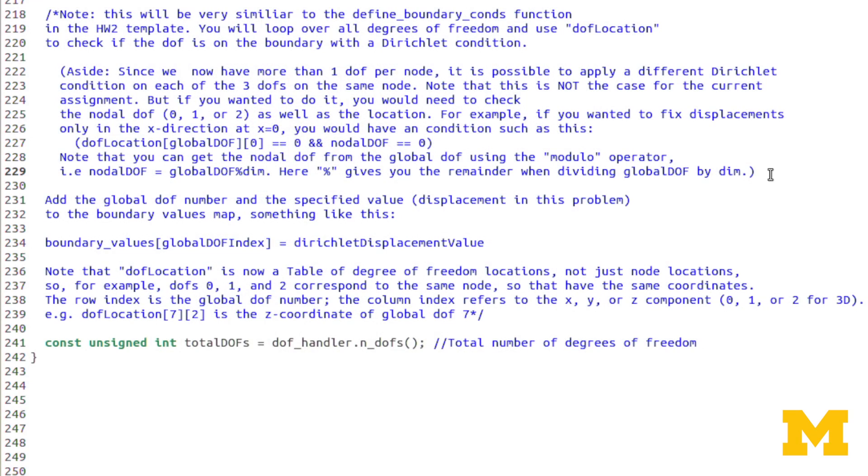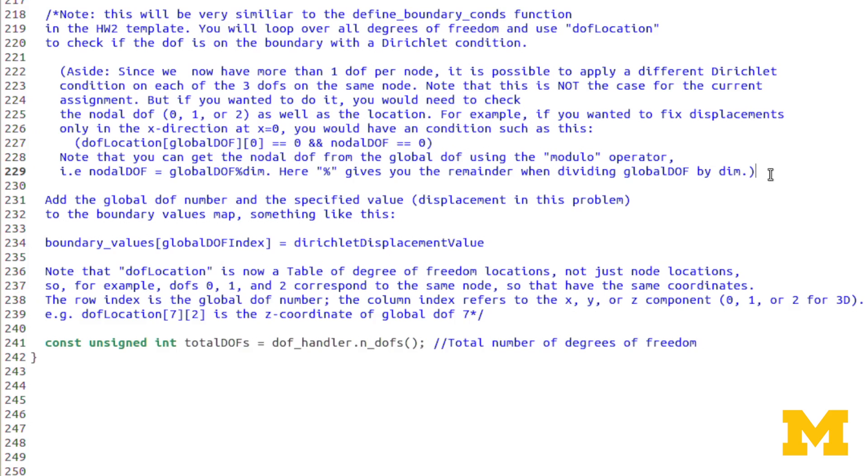I've explained that in the notes in the template. However, you don't have to worry about that in this assignment because our only Dirichlet boundary condition is to fix all degrees of freedom on the face where z equals 0. So all you have to do is check: is the z component of DOF location equal to 0? If it is, set that degree of freedom equal to 0, whether it's in the x, y, or z direction. But in the future, you can distinguish between displacements in the x, y, or z direction when applying Dirichlet boundary conditions.